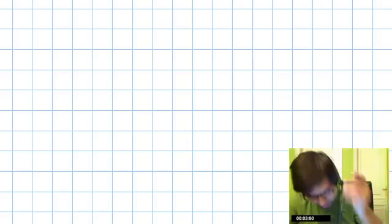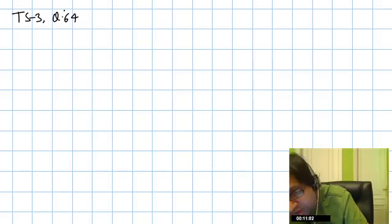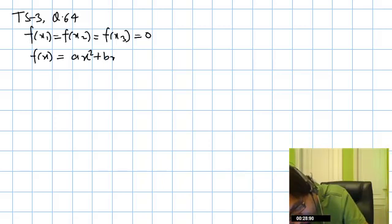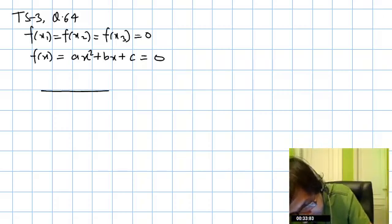This is TS3 question number 64. In this question, the property F(x₁) = F(x₂) = F(x₃) = 0 is given, and F(x) is a quadratic polynomial. If F(x) is a quadratic polynomial, it can intersect the x-axis at two points. The graph is a parabola, and a parabola can intersect the x-axis at two points.